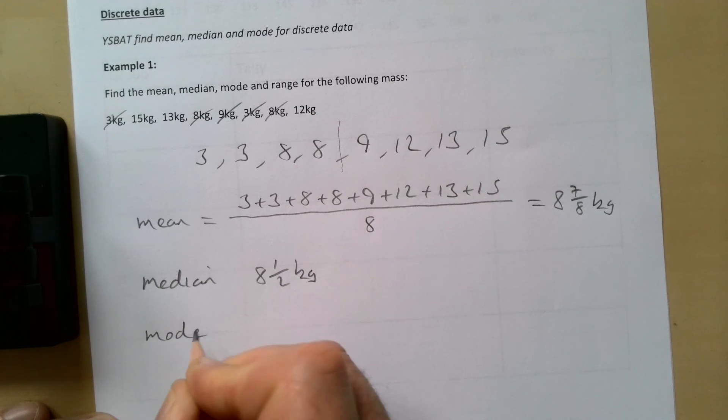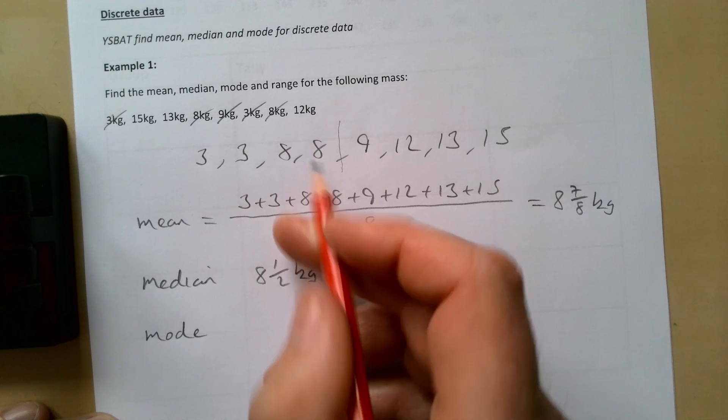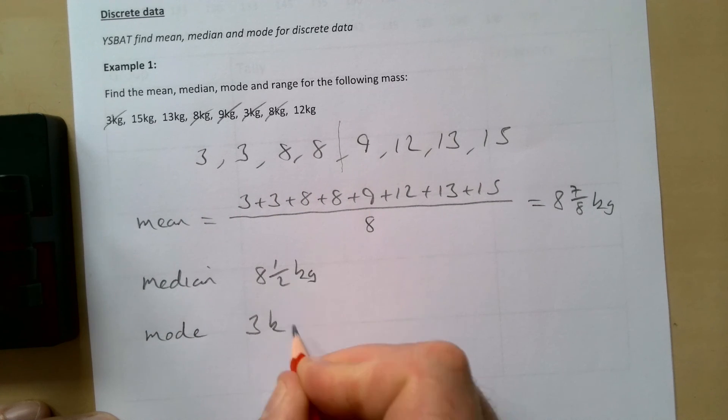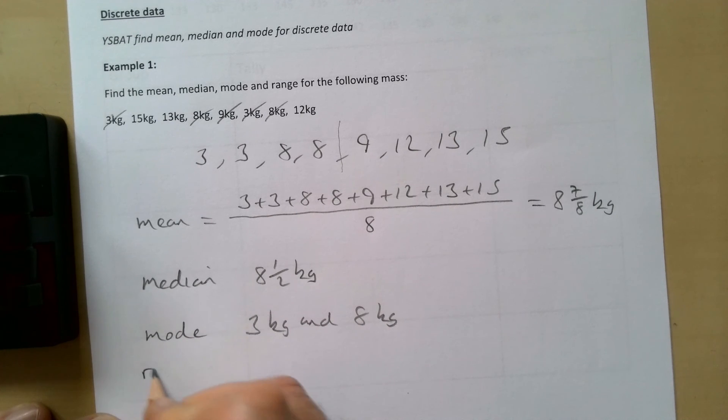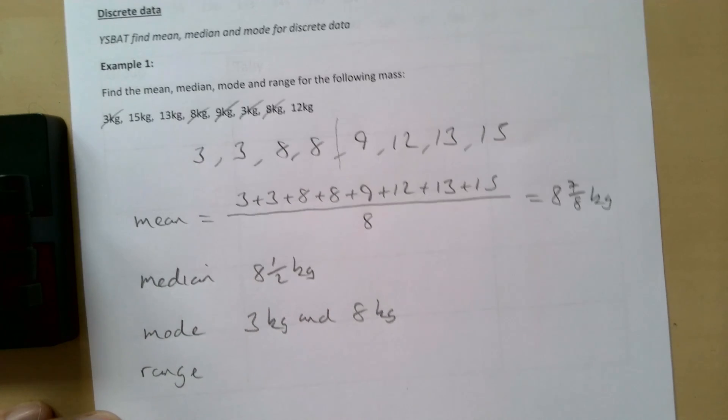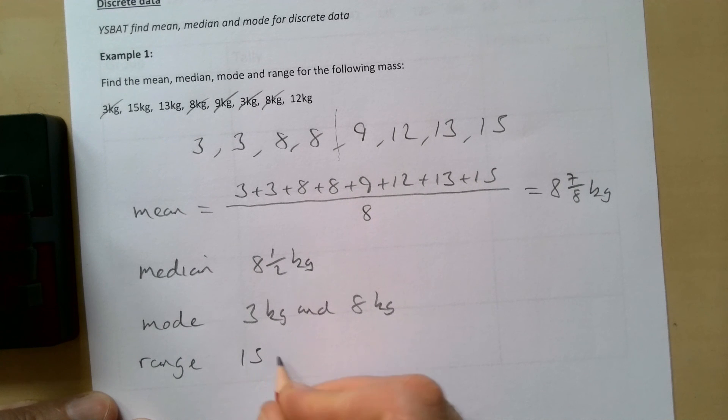Mode - most common - there are 3 and 8, so 3 kilograms and 8 kilograms. And the range then is the biggest take away the smallest, so it's going to be 15 take away 3, and that gives us 12 kilograms.